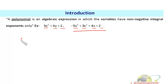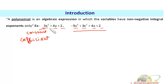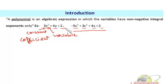One more term — coefficient. In 3x², the 3 is a constant and x is a variable. A coefficient is whatever is being multiplied to that particular variable. So here, 3 is the coefficient of x². Similarly, the coefficient of y is 4, and 2 is the constant term. In −5x³ + 3x² + 4x + 2, the coefficient of x³ is −5, coefficient of x² is 3, coefficient of x is 4, and 2 is the constant term.